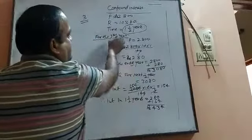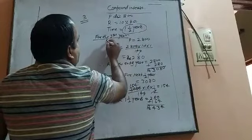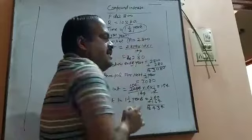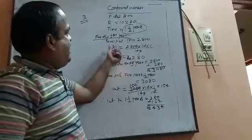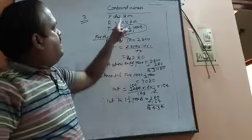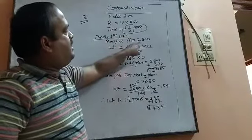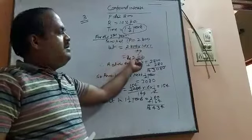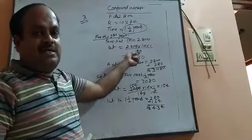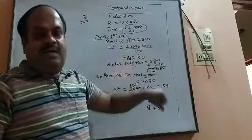For the first year — first year means a duration of 1 year — the principal P at the beginning of the year is 2800 rupees. The interest on it we can calculate by the formula P into R into T upon 100. Therefore the interest of first year is P into R which is 10 into 1 upon 100. On simplification it comes as 280 rupees. So 280 rupees is the interest of the first year. This interest can also be called simple interest.